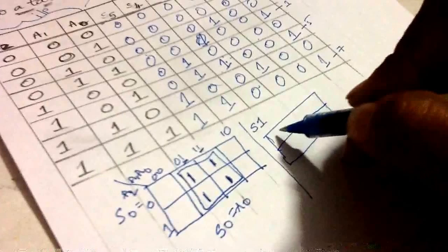2 and 6, which is S2 equals A1 A0 bar. Similarly, write for S3, S4, S5.